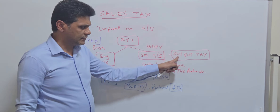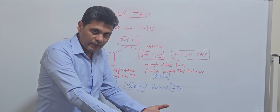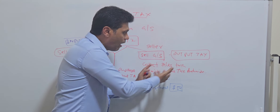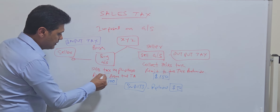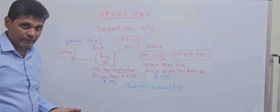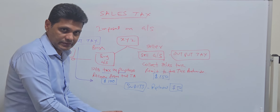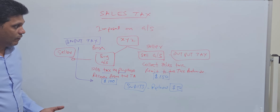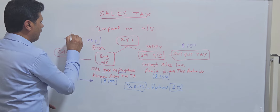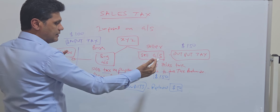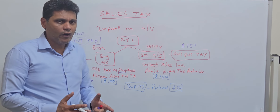Why do we call it output tax? Because the tax collected has to be remitted to the tax authorities — so the tax is going out from the company. However, the taxes paid at the time of purchasing can be recovered, so that tax will come into the business, and therefore it is known as input tax. So the output tax of $150 minus the input tax of $100 gives a difference of $50 which is remitted to the tax authorities.